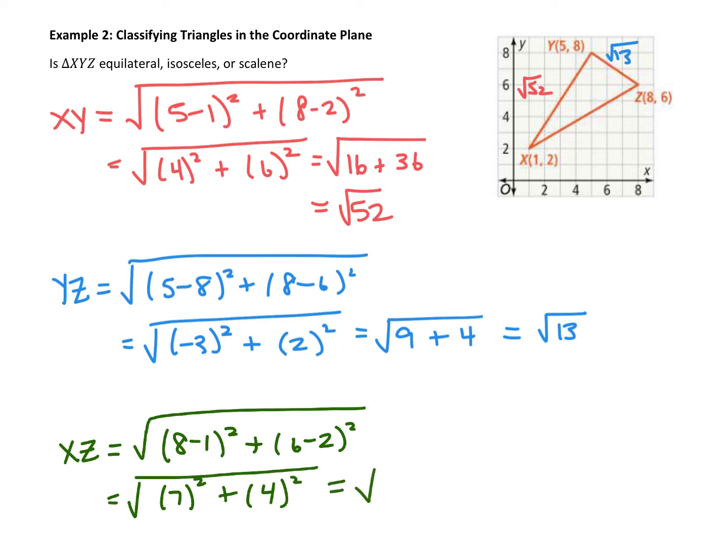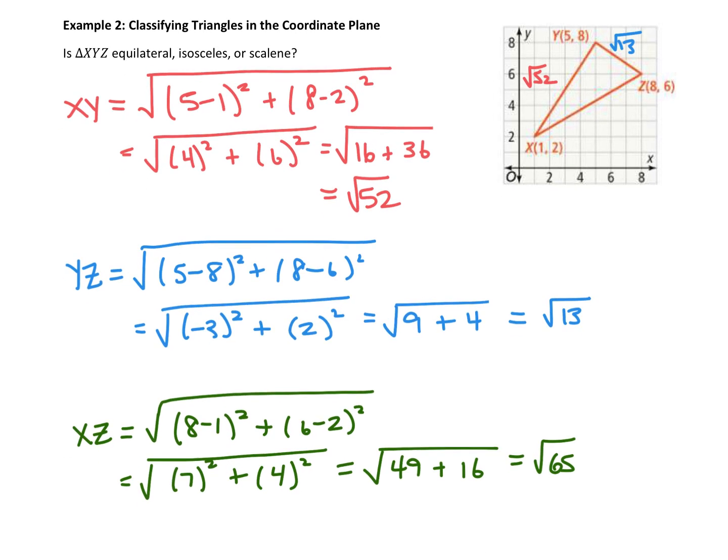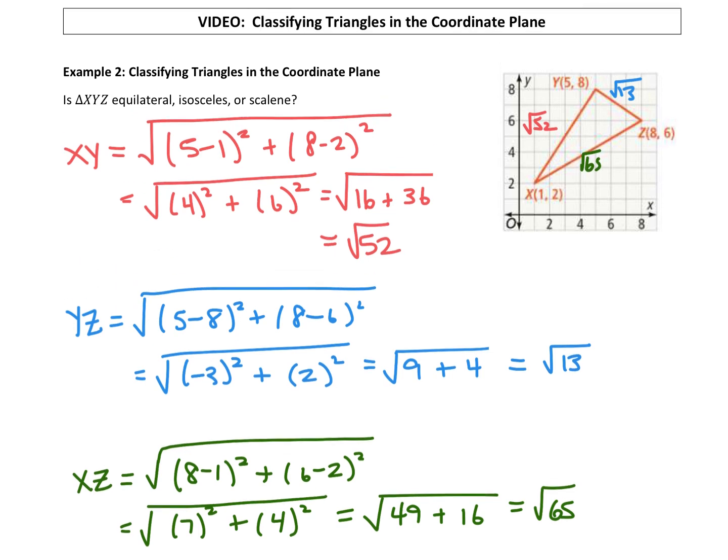Now we'll go ahead and square these. 7 squared is 49. 4 squared is 16. And then 49 plus 16 is the square root of 65. So do we have any congruent sides? They all have different lengths. When they all have different lengths like that, that makes this a scalene triangle.